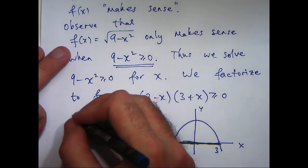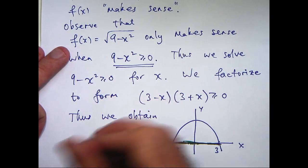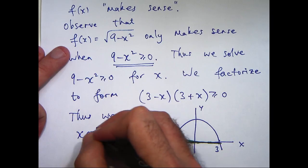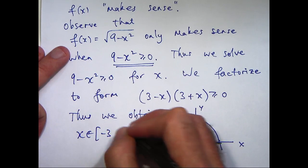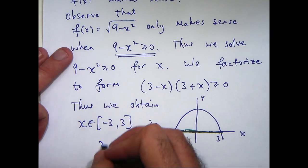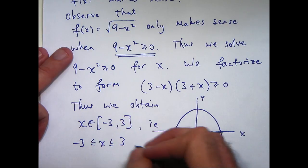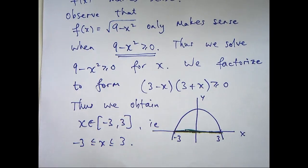So the corresponding x values lie between negative 3 and positive 3. So we can solve our inequality. X is in this interval here. And by this interval, of course, I mean x is greater than or equal to minus 3, less than or equal to 3. So this is our domain.